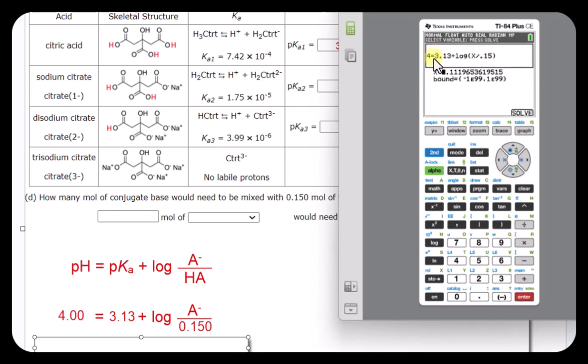1, 4, 3.13 log of my base. And again, whenever you do a buffer problem, you've got to think of the conjugate base that matches the acid. Acid, base. And we'll solve for this.